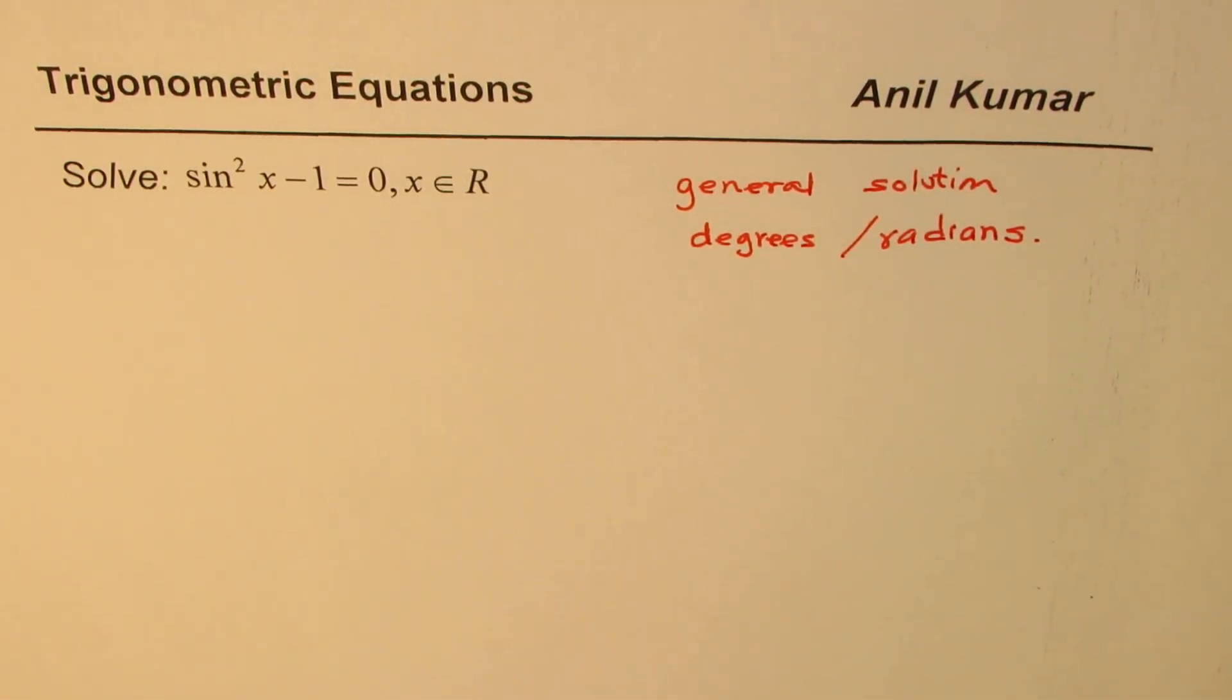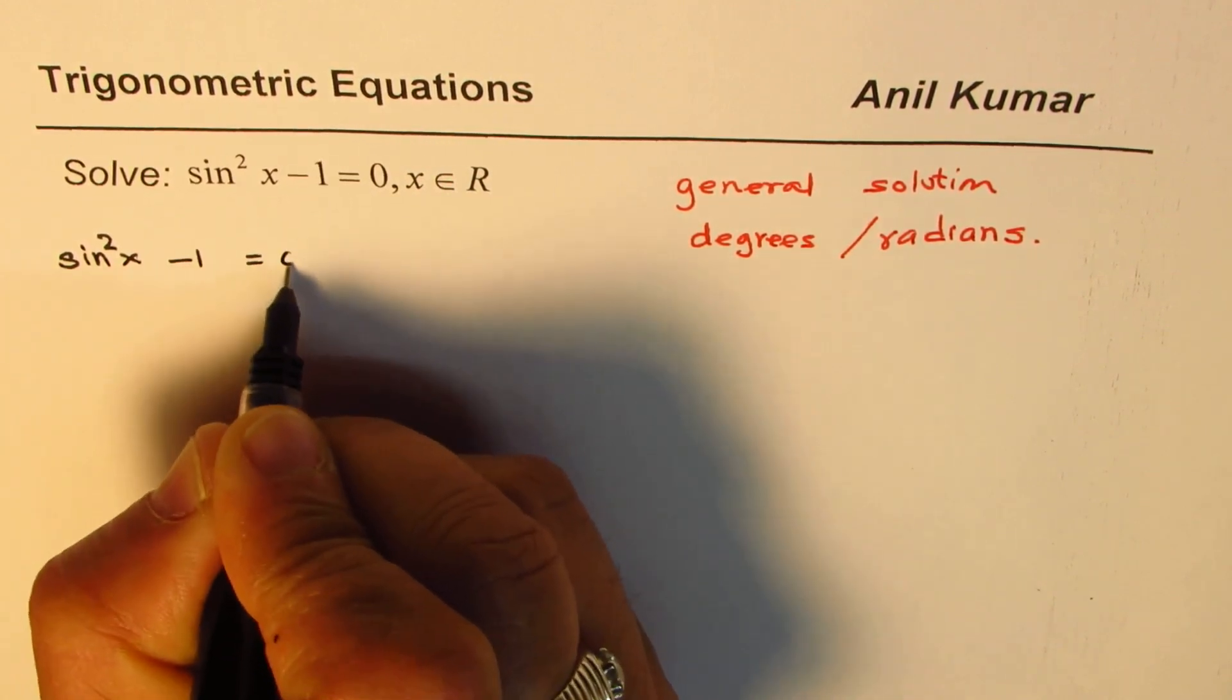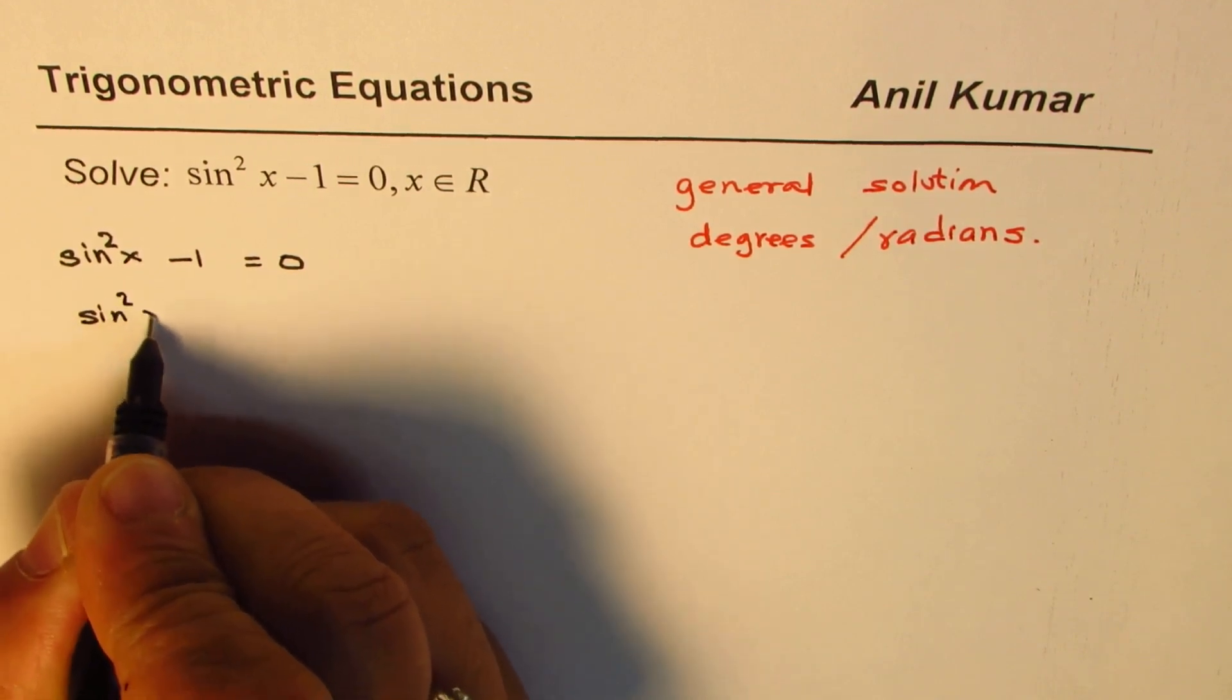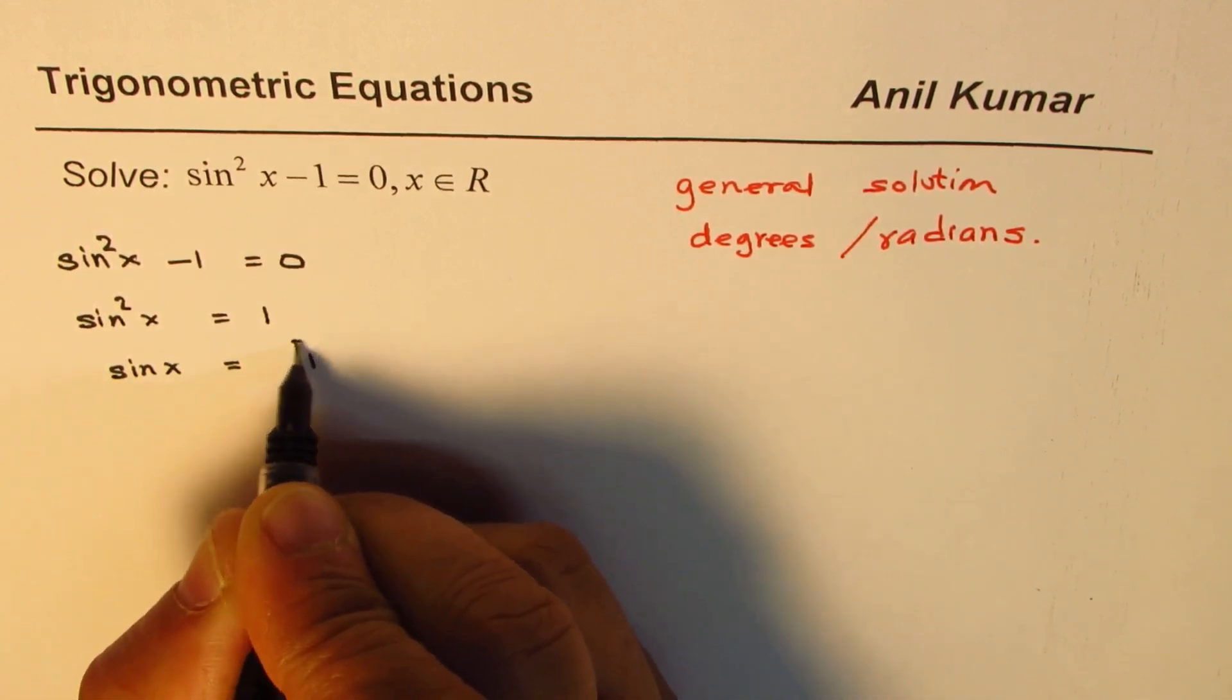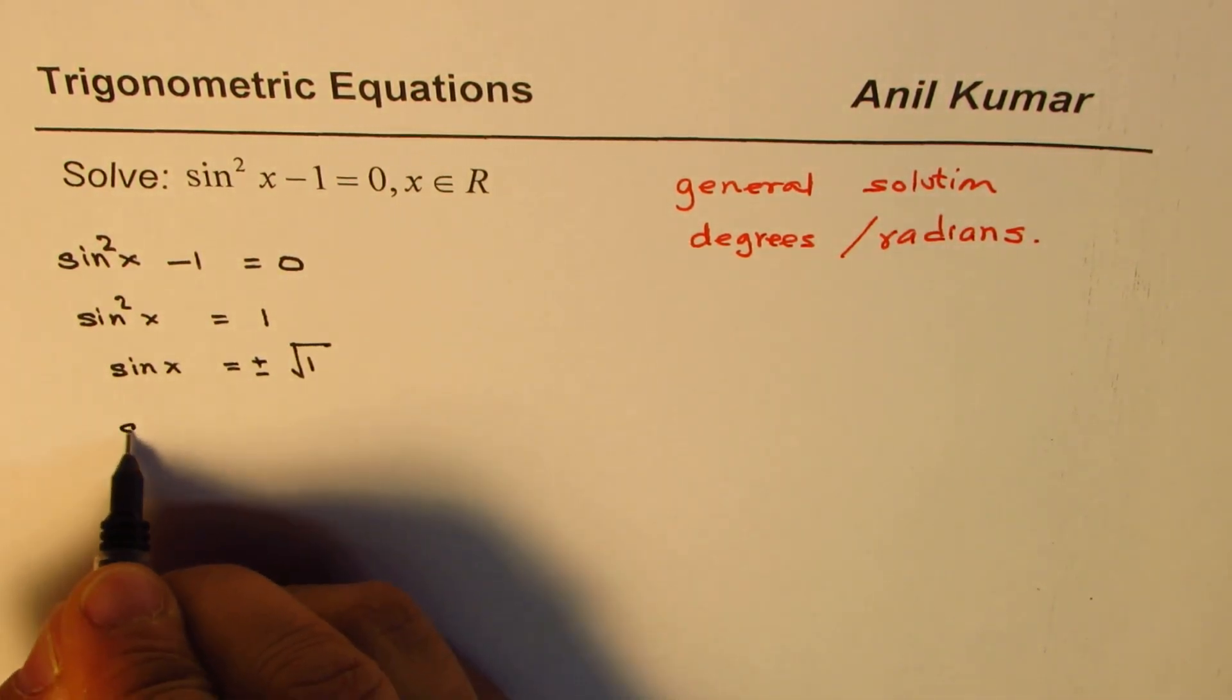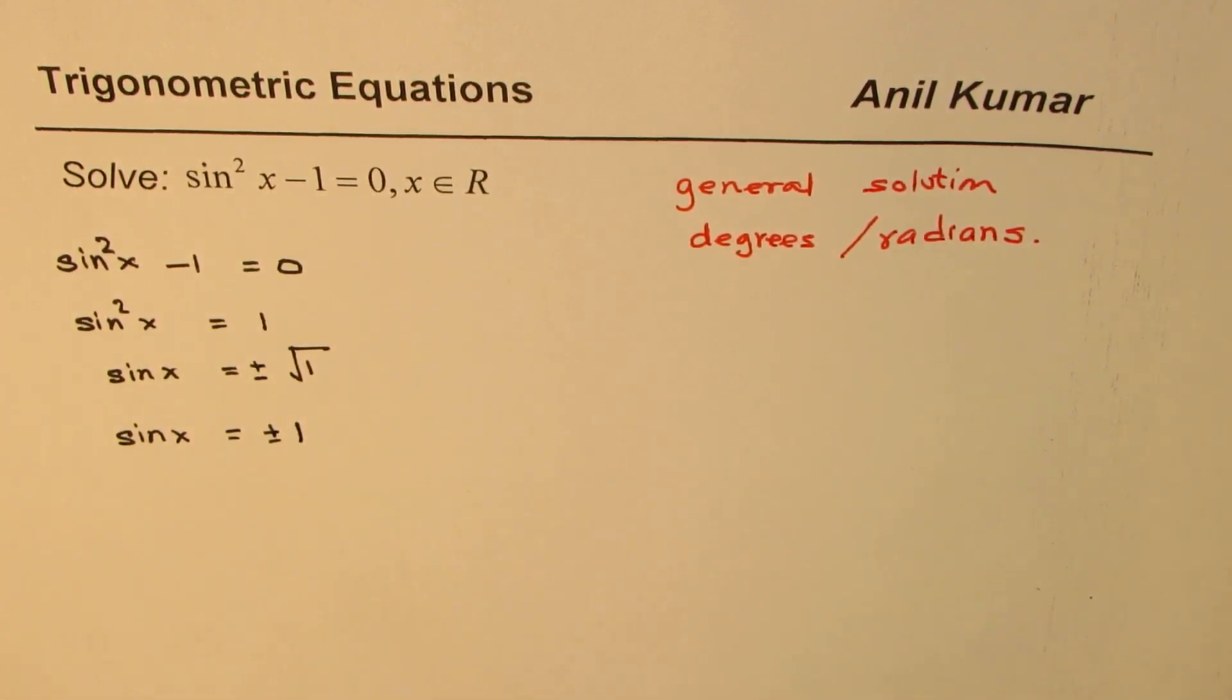Now, let's solve this equation to find the solution. We are given sine square x minus 1 equals to 0. You could say sine square x equals to 1, sine x equals to square root of 1 with both plus and minus values, which is sine x equals to plus minus 1.